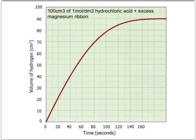This graph and ones on subsequent slides show the graph that you would expect to get if you reacted 100 cubic centimetres of a 1 mole per cubic decimetre solution of hydrochloric acid with excess magnesium ribbon and then collected the hydrogen that was produced.